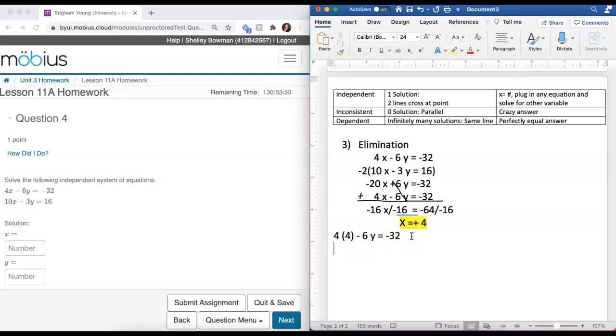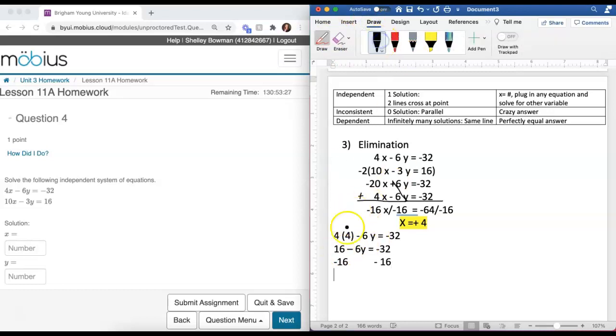4 times 4 is 16, minus 6y equals negative 32. Now I need to subtract the 16 from both sides so that I can get the 6y all by itself. And on the right-hand side, minus 16. So 16 minus 16 cancels. That goes to 0. I like crossing it out so that I see that visual. It's gone. And then on the right-hand side, or left-hand side, I have left is negative 6y. And negative 32 minus 16 gives me 48. Negative 48.